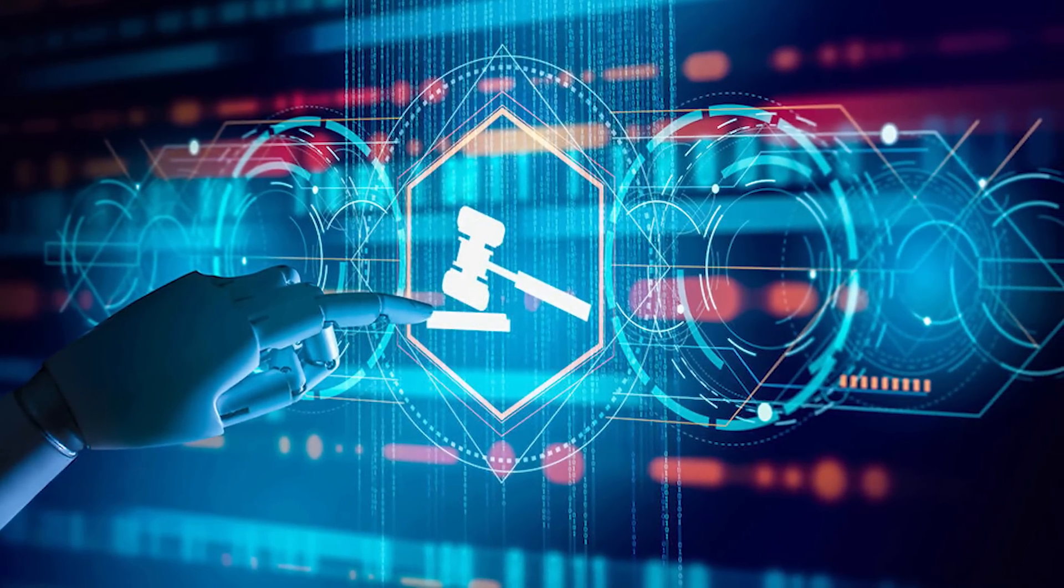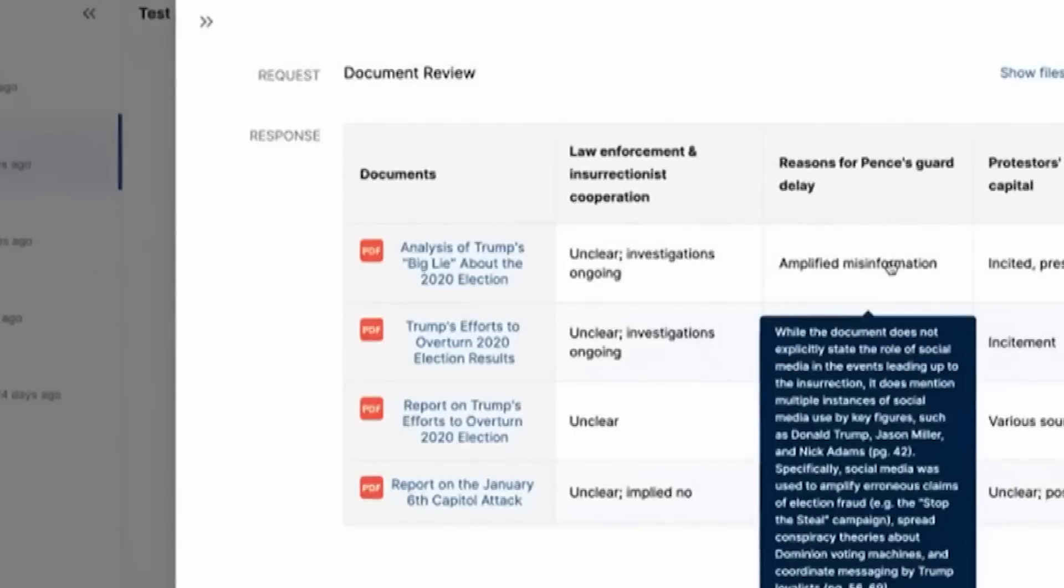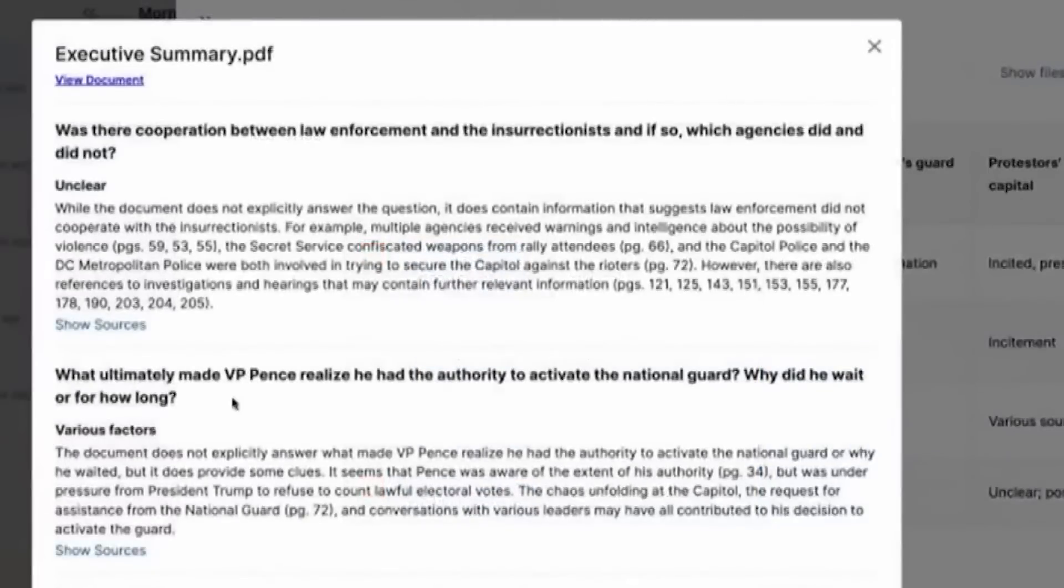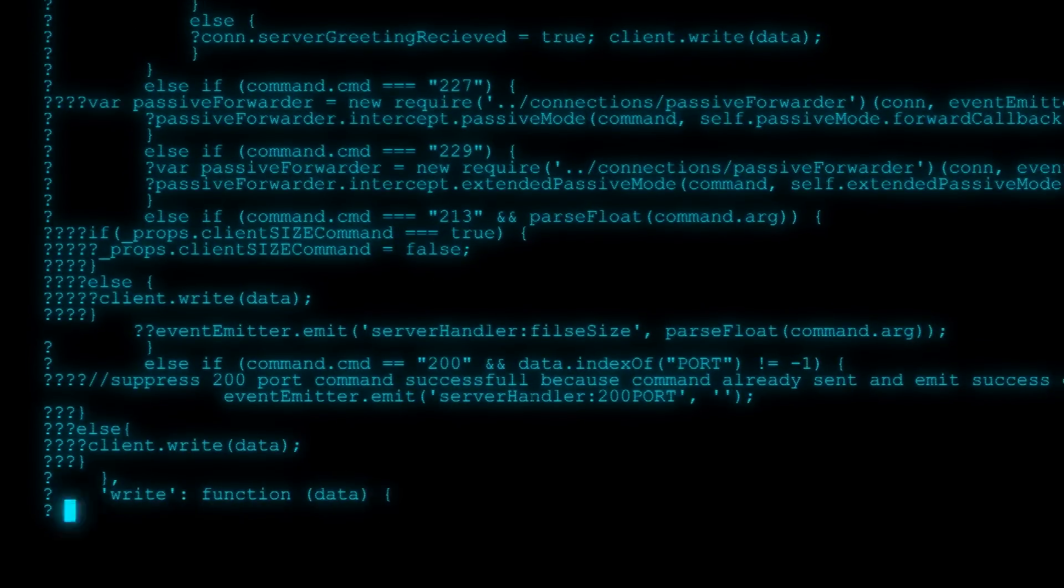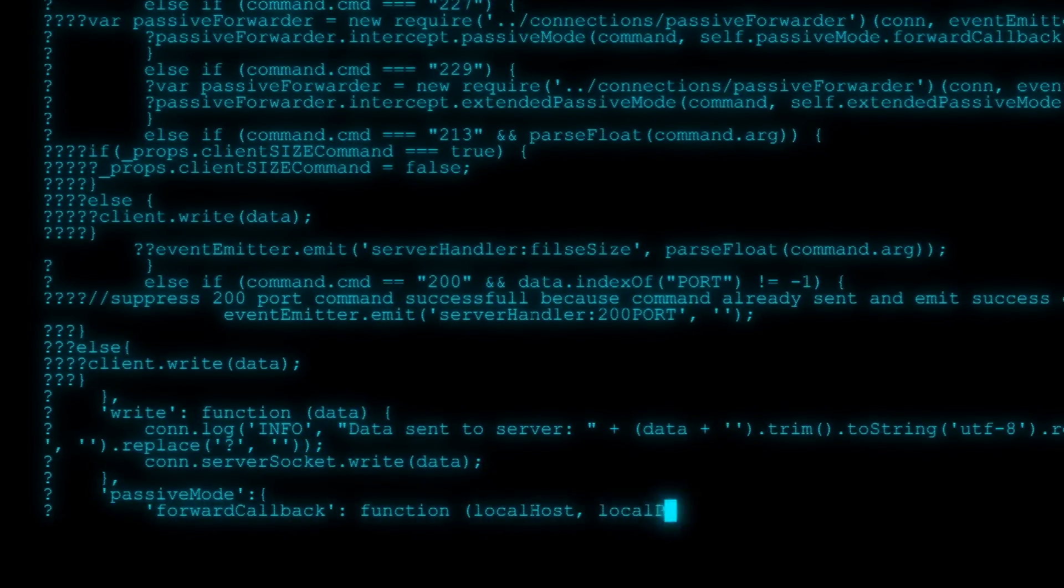One of the key advantages of AI-powered legal research tools is their exceptional accuracy. These tools are designed to interpret and analyze legal documents with a high level of precision, minimizing the risk of errors and providing reliable information to legal professionals. This accuracy is particularly valuable when dealing with complex legal issues that require thorough and precise research.